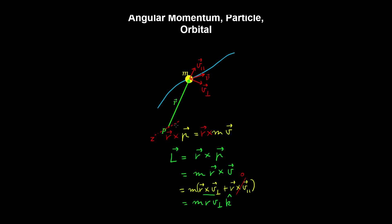This term here is zero, and we can write the magnitude of the cross product as r times v-perpendicular. In two dimensions, this vector is going to point in or out of the plane, so in the z direction. If we put the tail of the radial vector and the perpendicular velocity vector together, then by the right-hand rule, the angular momentum vector is going to point into the screen, so we put a negative sign here. This is known as the orbital angular momentum of the particle about the axis passing through point P.